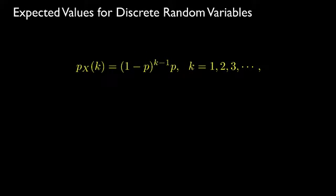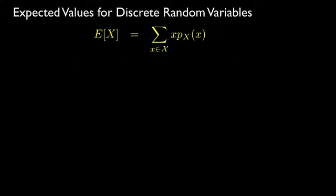As an example, let's look at the expected value for a random variable that takes its values over the positive integers with a geometric probability mass function. This random variable corresponds to the number of trials it takes to see the first success in a sequence of Bernoulli trials with success probability equal to the parameter p. To compute the expected value, we'll need to sum the product of all the values the random variable can take with the probability of taking those values. Because the range is all the positive integers, the summation is from 1 to infinity.